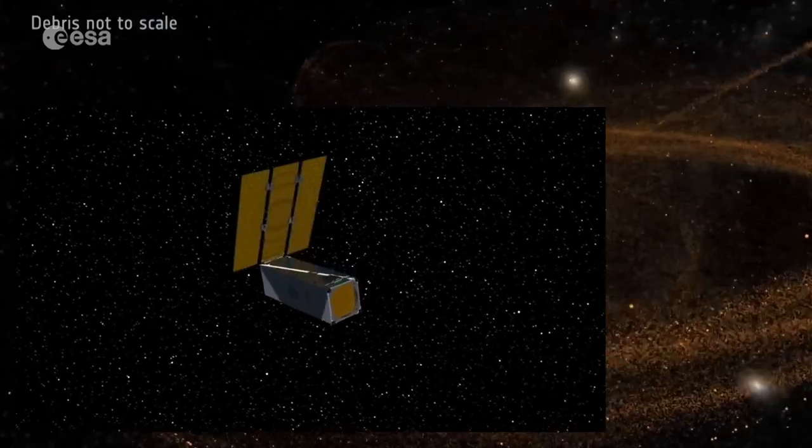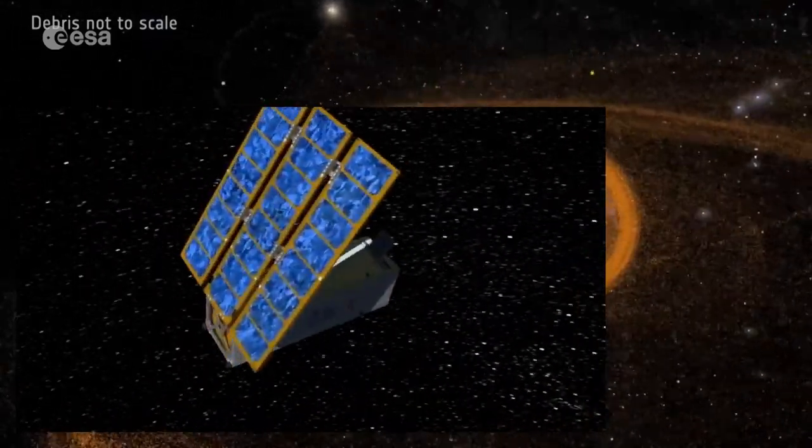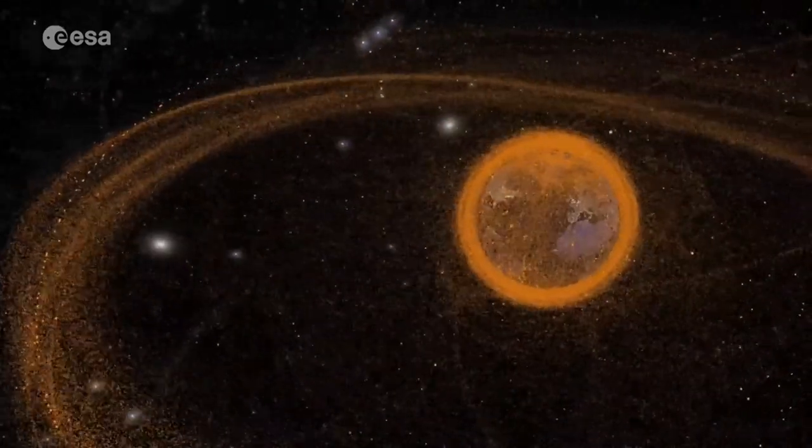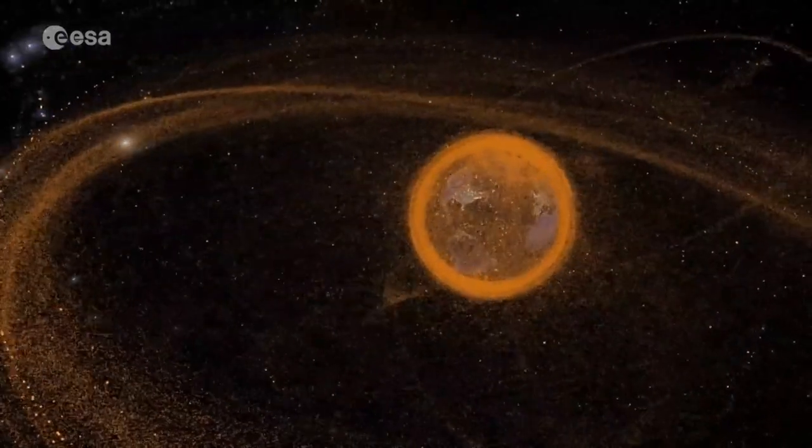Tyrion's devices will consist of CubeSats that will track down and attach to space debris and then bring the debris to a lower orbit where Earth's atmosphere can do the rest.